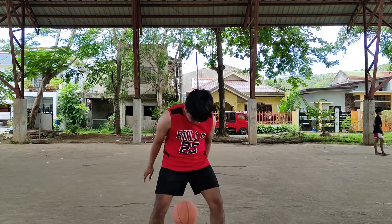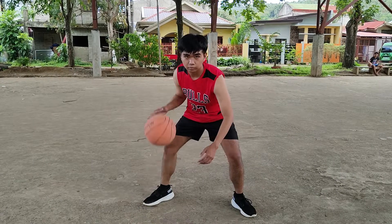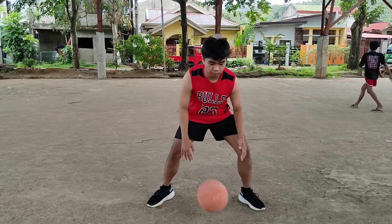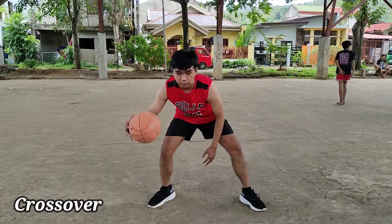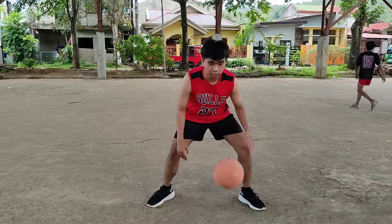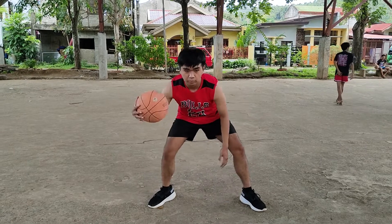The first type is a regular dribble. A regular dribble is, as the name suggests, a typical basic dribble. This can be done while stationary or while moving. The second type is a crossover. A crossover dribble is a basketball maneuver in which a player dribbling the ball switches the ball rapidly from one hand to the other to make a change in direction.